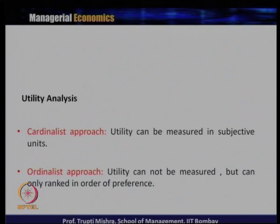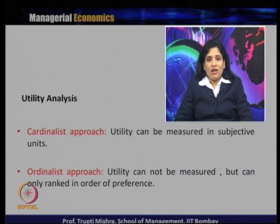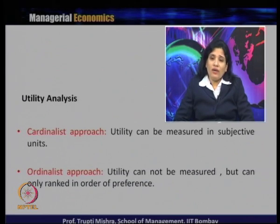There are two ways to measure utility. One is the cardinalist approach, where utility can be measured in subjective units. The second is the ordinalist approach, where utility cannot be measured but can only be ranked in order of preferences. In the cardinalist approach, the unit of measurement is utils, whereas in the ordinalist approach, we rank goods by preference without quantifying.